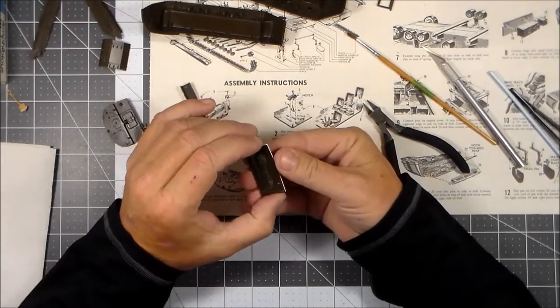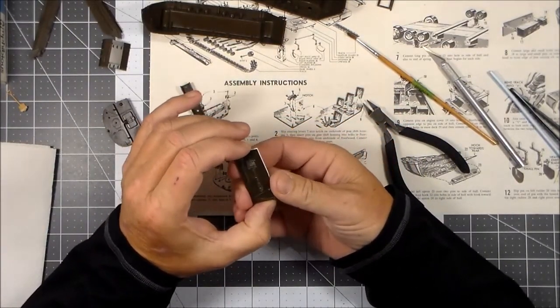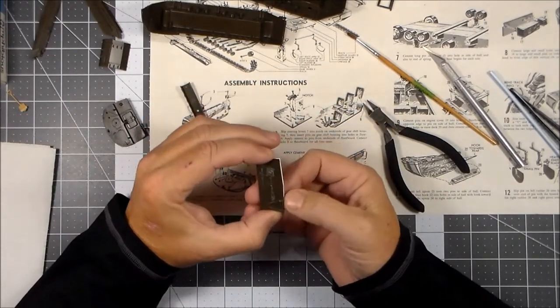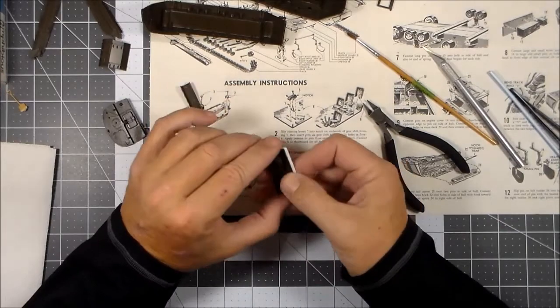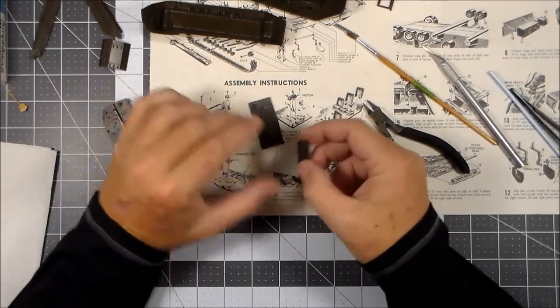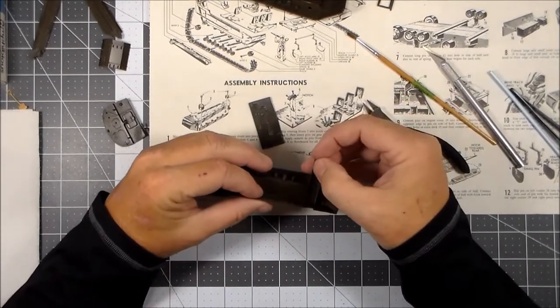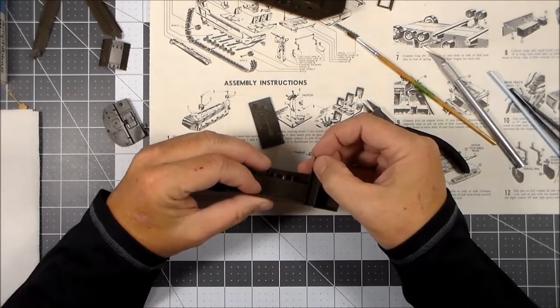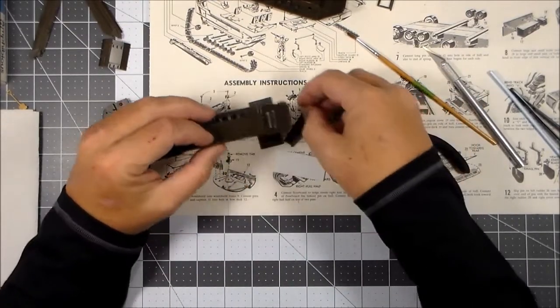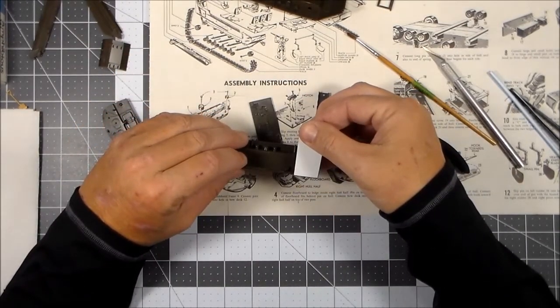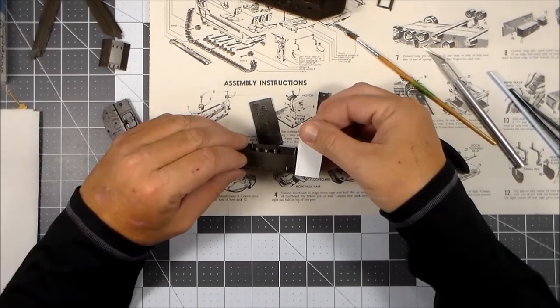I found the thickest one which was 0.040 inches and basically traced out a new deck, cut it out and sanded it to size. So what will happen is whenever I put this together, this part will go here like it's supposed to, in between, and this will rest on top of that just like the other part did.